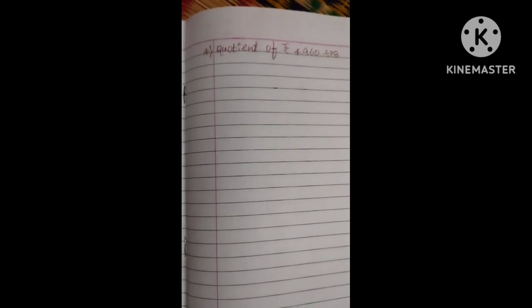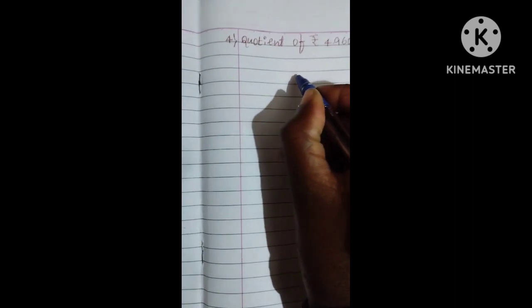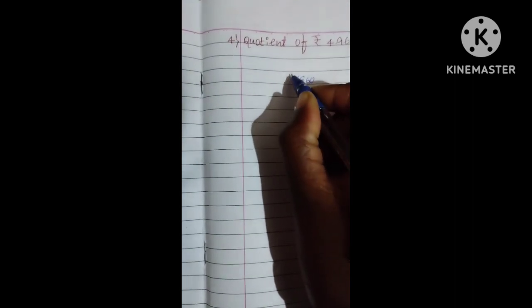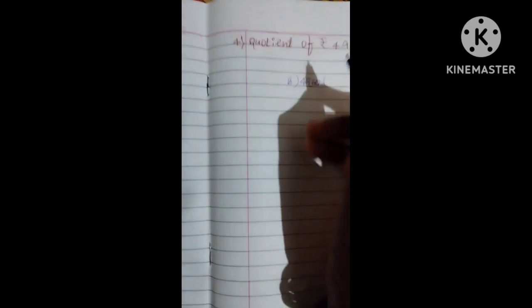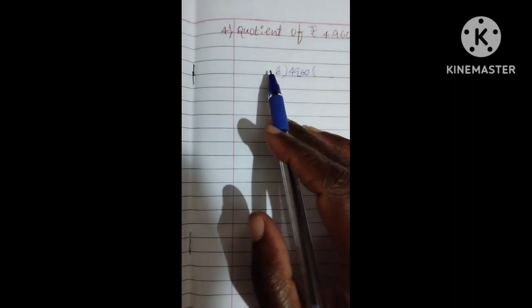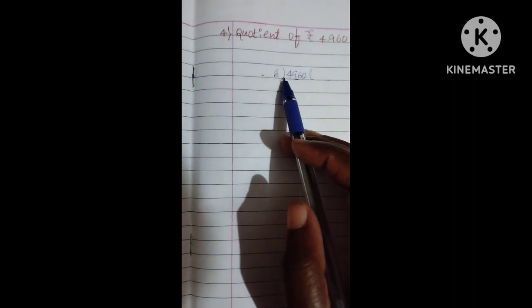Next, we have quotient. Quotient means we need to do division. So, 4960 by 8. Divide by 8. Now, in 8 ones, we have 49. We have 48.